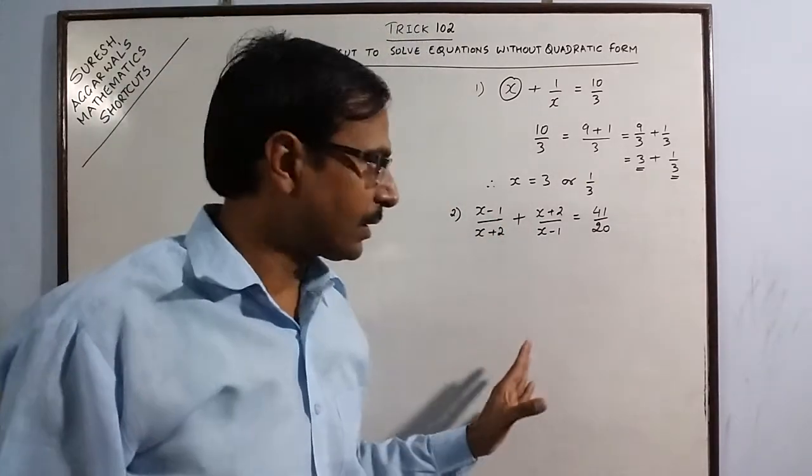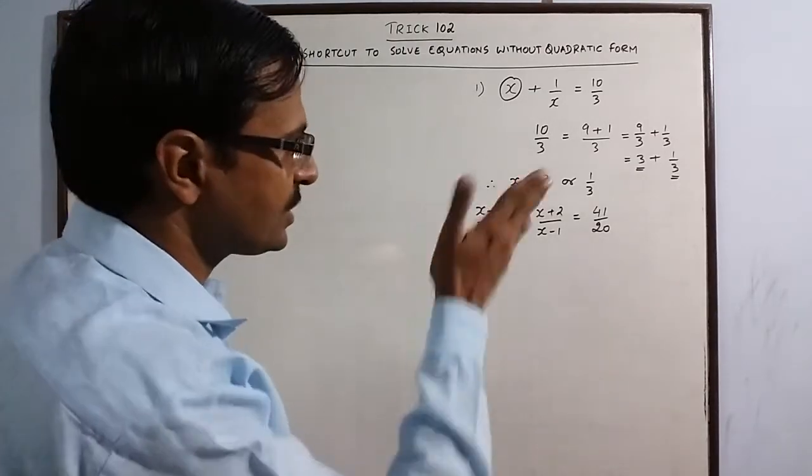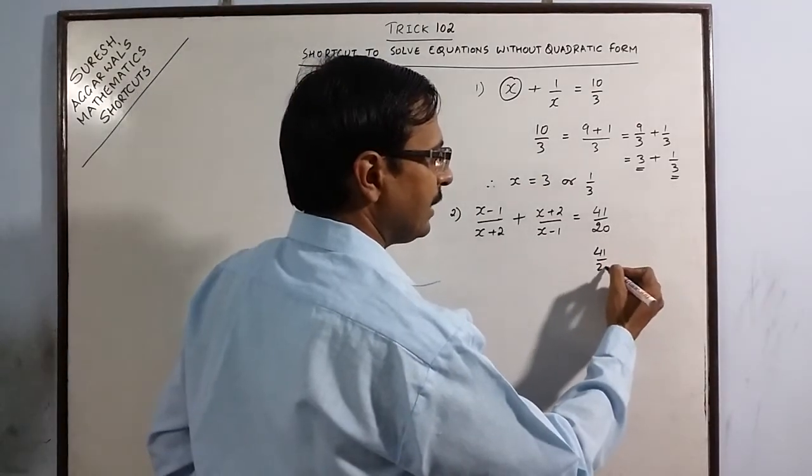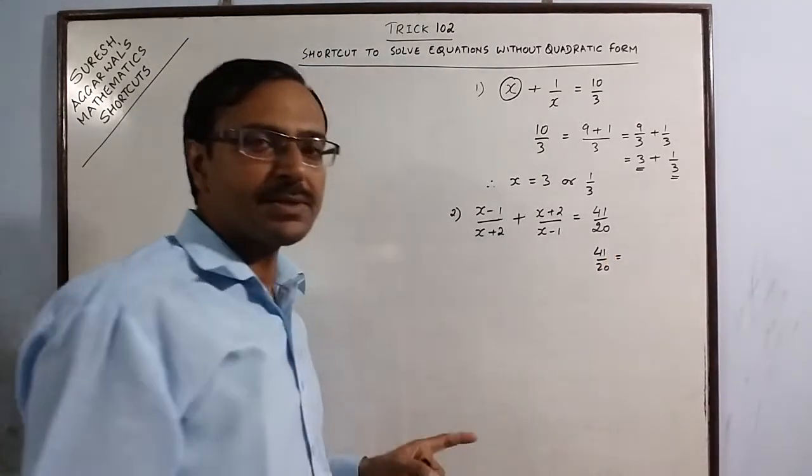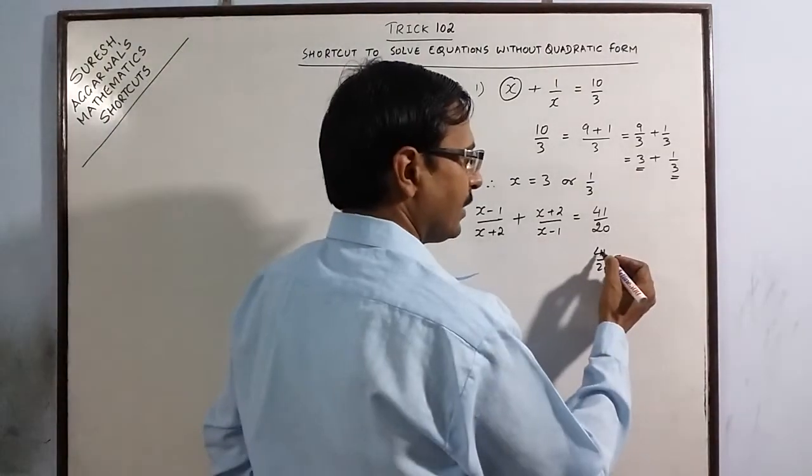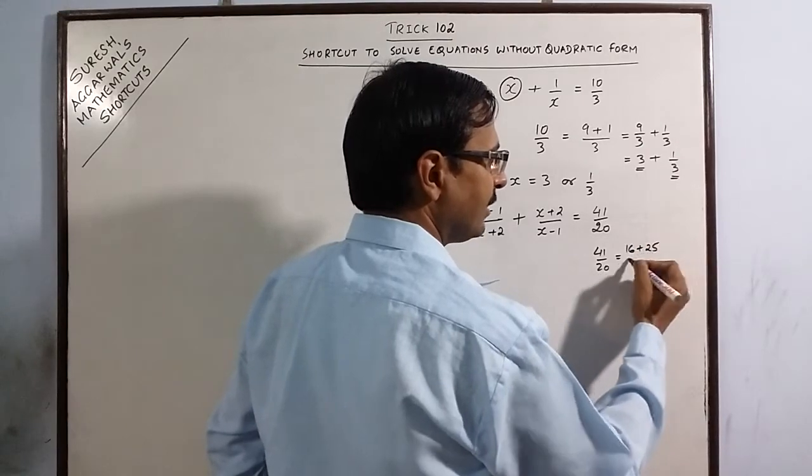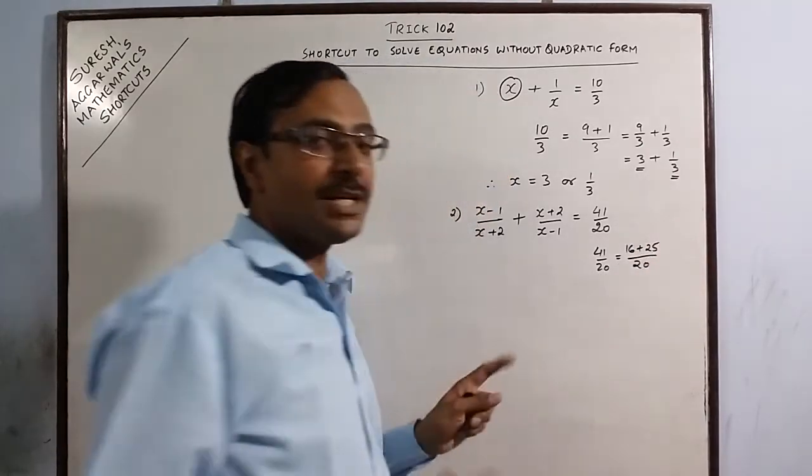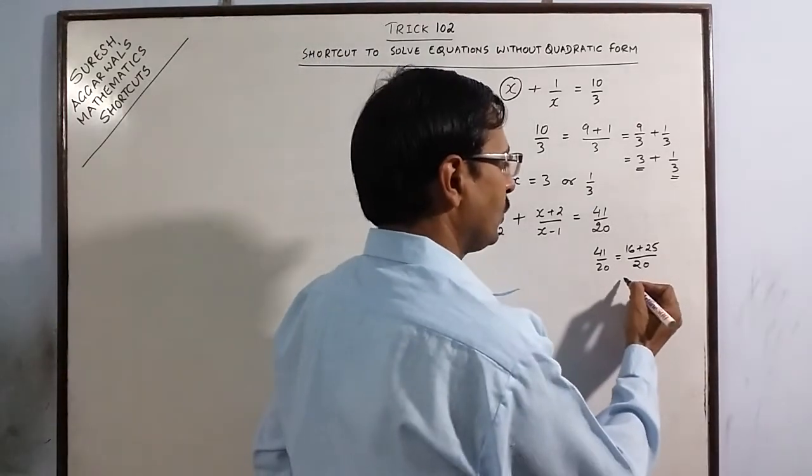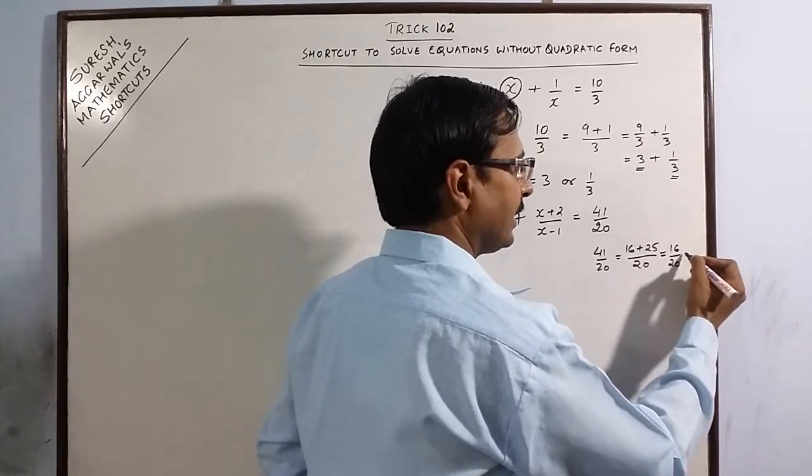Now this is a very long question. If you take LCM, you are spending a lot of time in the traditional method. Now, through this method which I just told you, we can break 41 upon 20. Numerator can be broken into two parts which both of them are perfect squares. See, 41, 16 plus 25 is 41. So, 16 and 25 both are perfect squares.